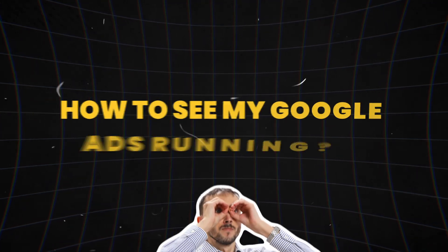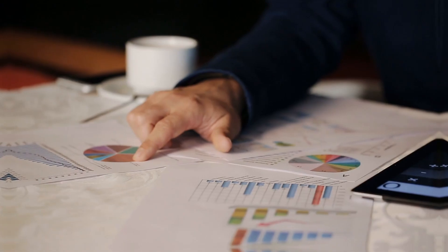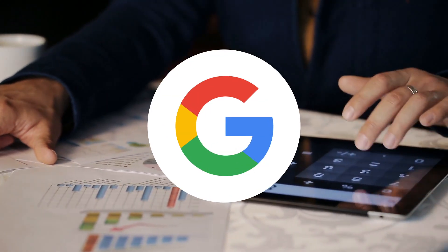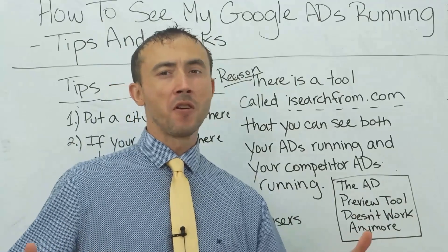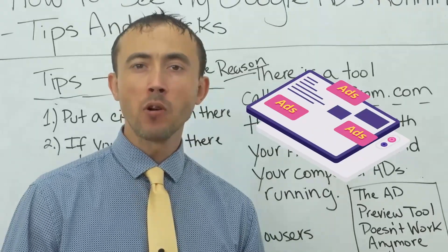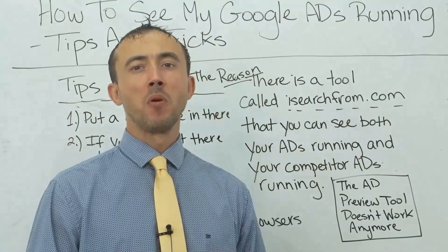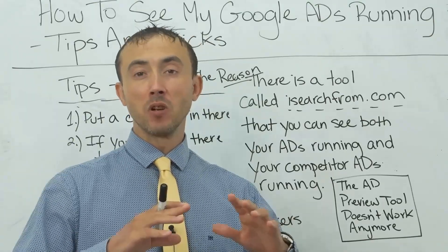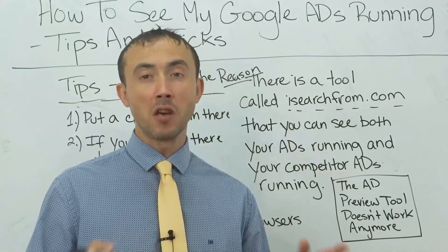Today's video, we're going to talk about how to see your Google Ads running — the tips and tricks to self-audit your own ads, whether they are actually showing on Google or whether they're not. It's obviously nice to be able to see the ads for yourself when you go onto Google and search for your own keywords. The problem is, everybody has this problem: they don't get to see those ads very easily, especially right up front when you're a new advertiser or have a new campaign running.